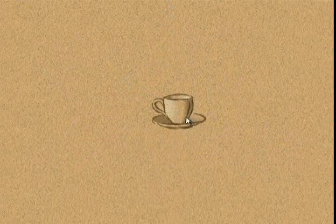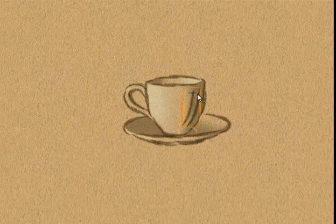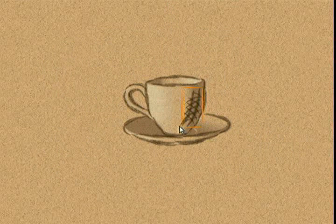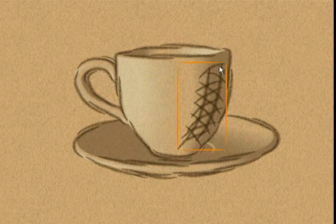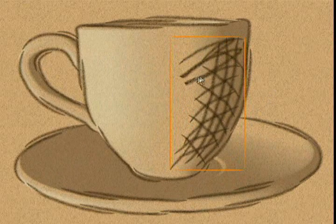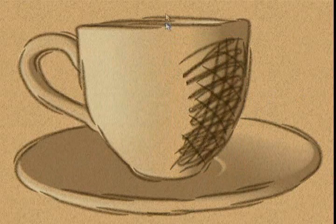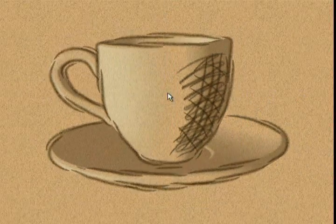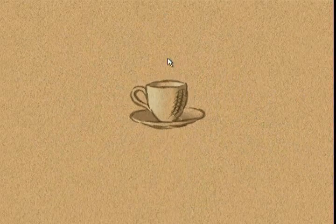In contrast, using free hatching, the artist may draw strokes in any orientation. In this case, the system cannot automatically generate new levels of detail. Instead, the artist draws all levels of detail, and the system automatically transitions between them.